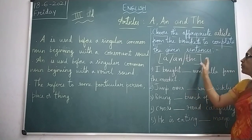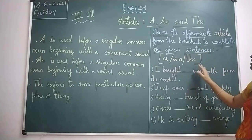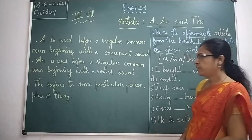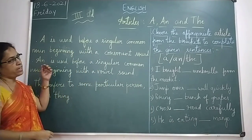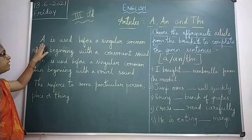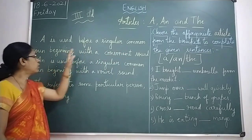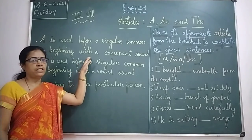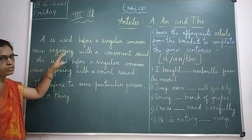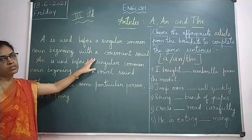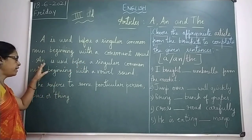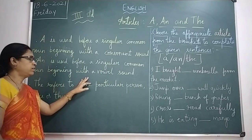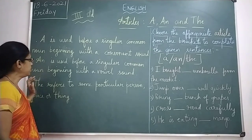We have to choose the appropriate article from the bracket and complete the given sentence. Before that, let us see how to use 'a', 'an', and 'the'. 'A' is used before a singular common noun beginning with a consonant sound. 'An' is used before a singular common noun beginning with a vowel sound.